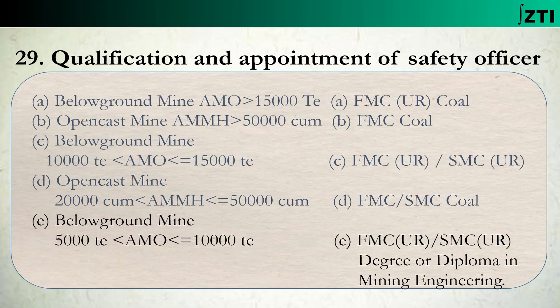Next E point kehta hai: agar kisi below ground mine mein average monthly output 5,000 ton se zyada ho lekin 10,000 ton ya usse kam ho, toh us mine mein aise koi bhi person jiske paas first class manager certificate ho jo not restricted to open cast only ho, ya phir second class manager certificate ho not restricted to open cast, ya phir degree ho, ya diploma in mining engineering ho, toh aise qualification wale person safety officer appoint kiye ja sakte hain.